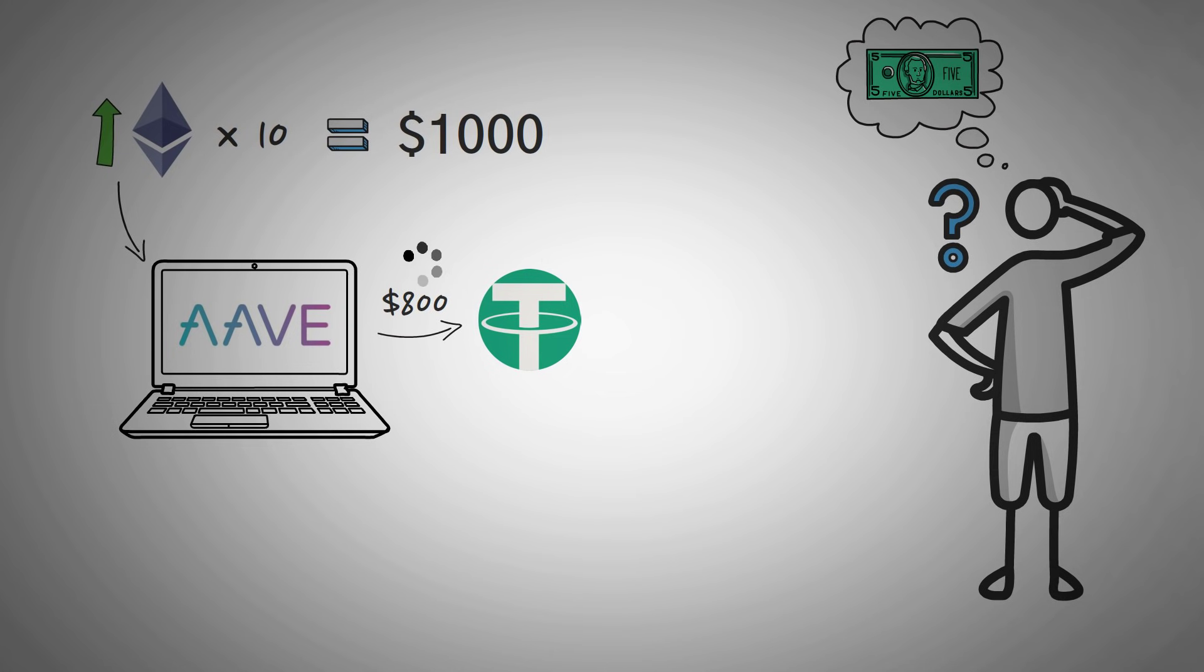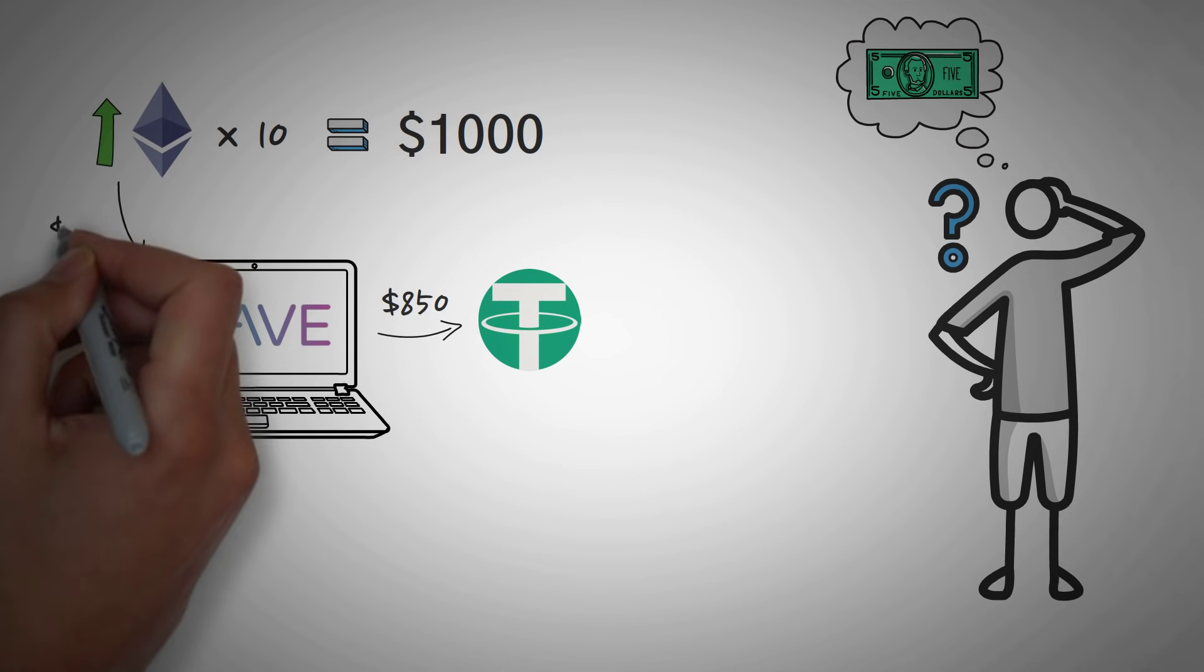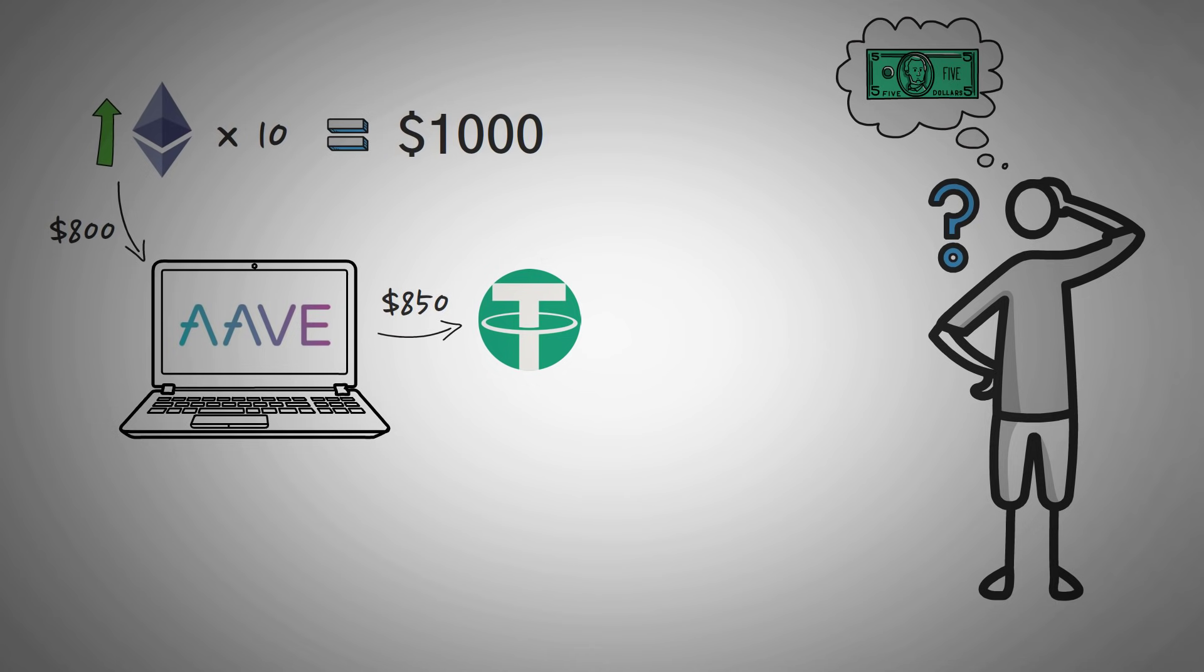So you trade that $800 around, you make some money, you lose some money, you make some more money, and now it's time to pay back your loan. So you have $850 in Tether and you pay back the original $800 loan to get back your 10 Ethereum.